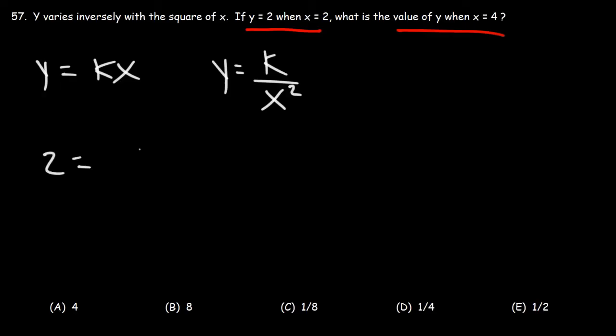So y is 2 when x is 2. So what is k? 2 squared is basically 4. Now let's write 2 over 1 and we can cross multiply.